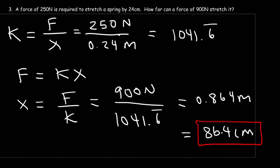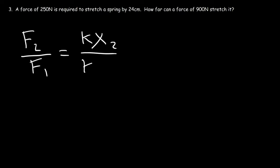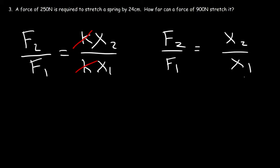Now let me show you another way. If we divide the second force by the first force, the second force is k times the second distance and the first force is k times the first distance. Since k is the same, we can cancel it. Therefore, the ratio of the forces is equal to the ratio of the displacements. This makes sense because x and F are proportional to each other. The units of centimeters will cancel, so it doesn't matter if you use meters or centimeters when dealing with ratios.